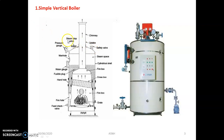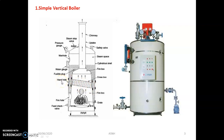The steam stop valve is also necessary for emergency purposes. The simple vertical boiler also consists of a cross box, and on either side of the cross box, hand holes are provided. The main function of the hand holes is to clean the tubes located in the cross box area. This is most important from a maintenance point of view.